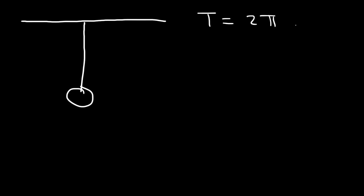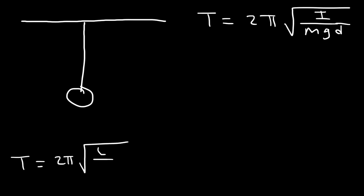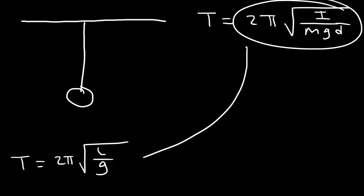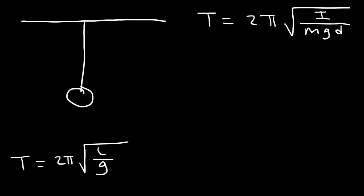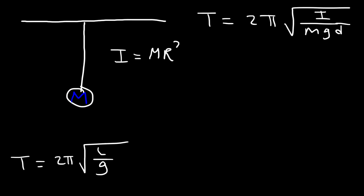It turns out you can derive the formula for a simple pendulum from a physical pendulum. The period of a physical pendulum is 2π√(I/mgd), and the period for a simple pendulum is 2π√(L/g). For a simple pendulum, we have a massless string, so all the mass is concentrated at one point. The inertia of that point mass is mR², and since R equals the length of the string, the inertia is mL².